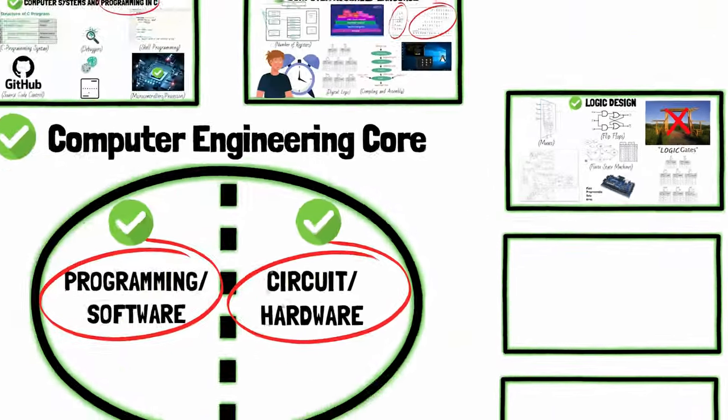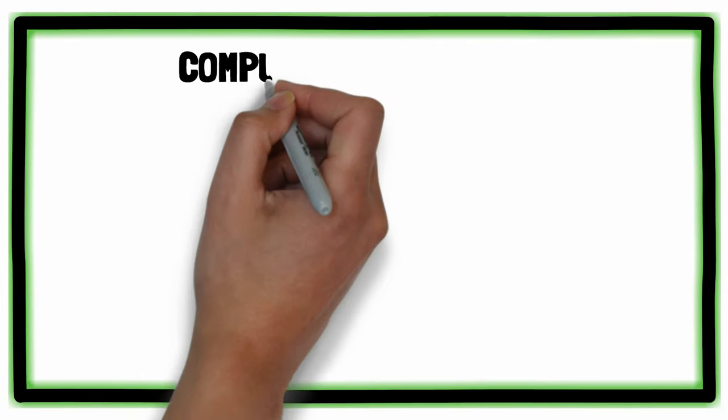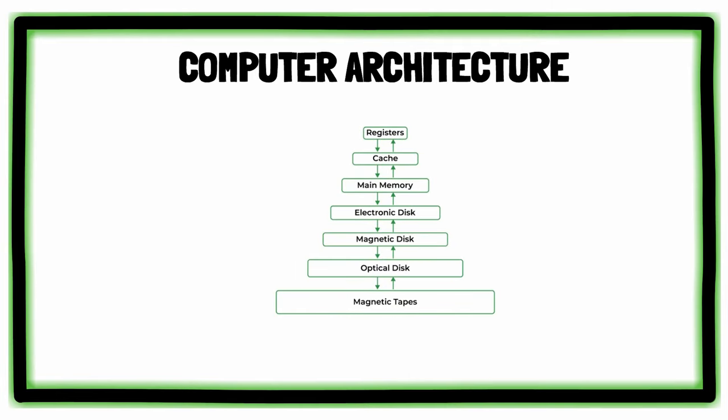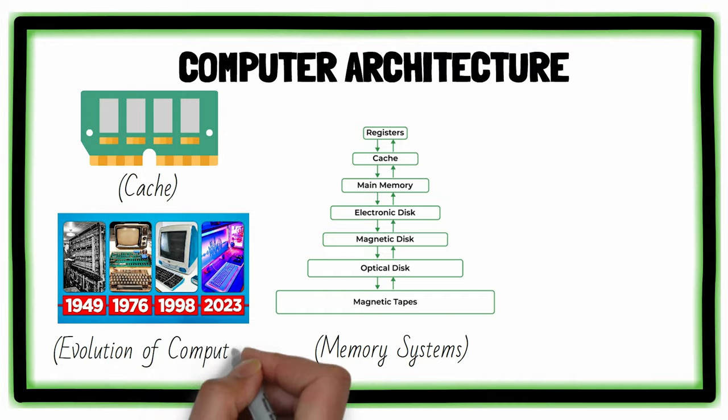Now hang on tight, we're closing in on the last few classes in the Computer Engineering core, arriving at the Computer Architecture course. You'll learn all the computer basics, like memory systems, cache, evolution of computers, and their internals.